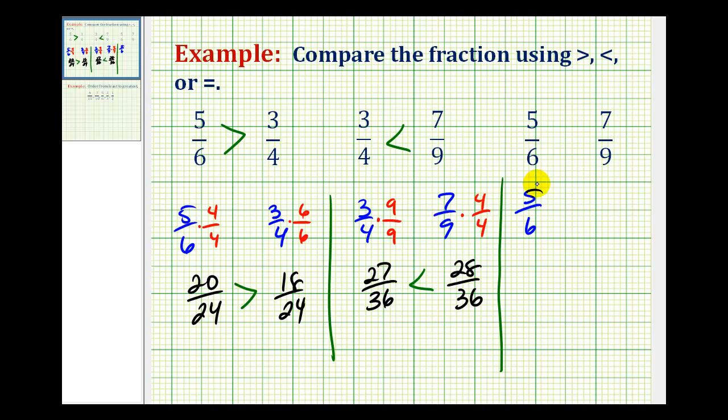Now let's compare 5/6 and 7/9. We'll use the common denominator of 54, which can be found by multiplying 6 times 9.